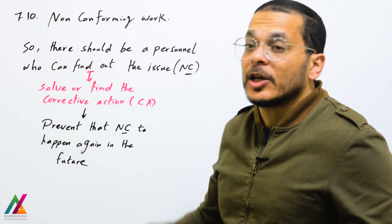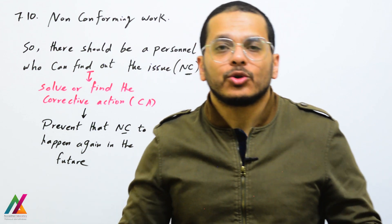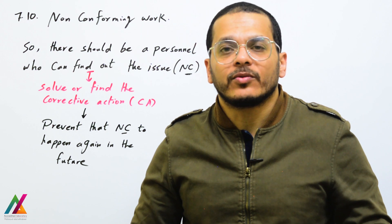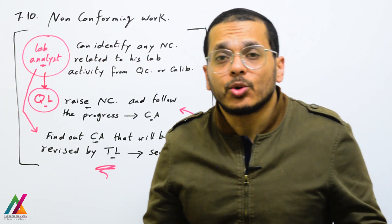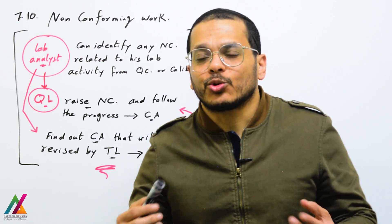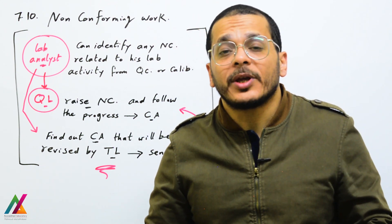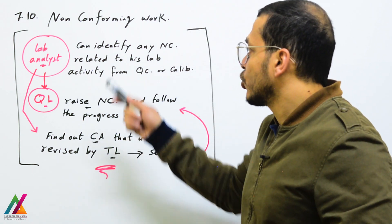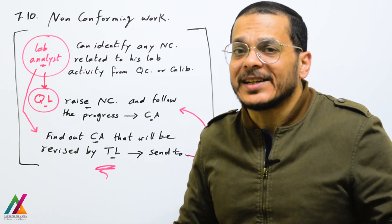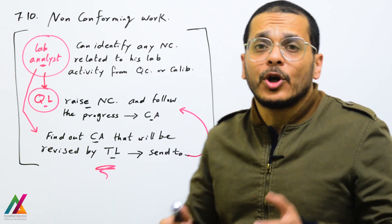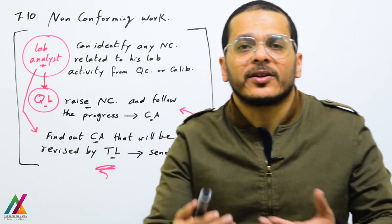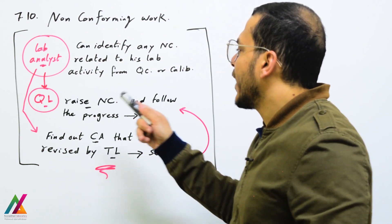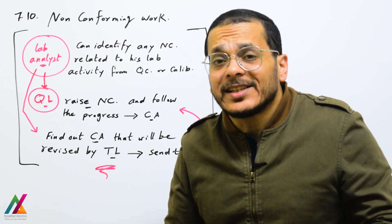Finally, the person responsible to organize all of this process and keep all documents related to it is the quality lead of the lab. During routine work, the lab analyst shall have enough experience to detect non-conforming work related to his lab activity. He shall identify any non-conformity from quality control results, calibrations, or other sources, and send that to the quality lead to raise the non-conformity.